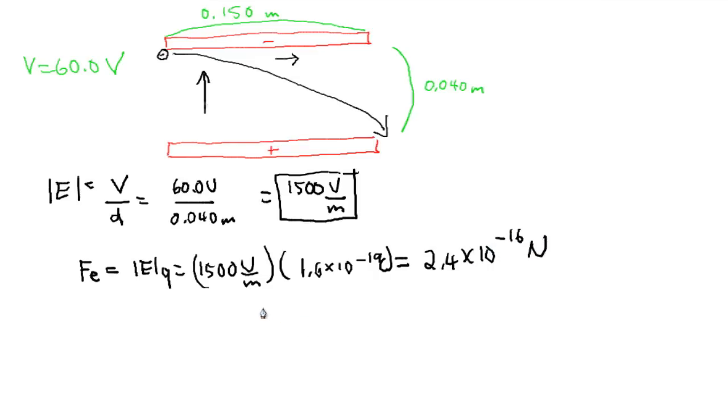Now the final step is we need to determine how much work is done on that negatively charged particle. Work is equal to force times distance. Therefore, our force is 2.4 times 10 to the negative 16 newtons multiplied by the distance which is 0.040 meters, which gives us a value of 9.6 times 10 to the negative 18 joules.